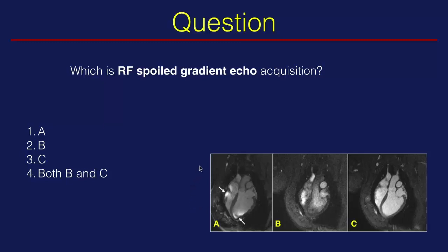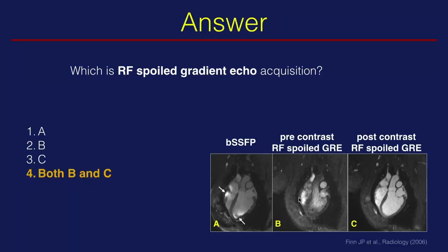Audience quiz: which image is an RF spoiled GRE acquisition — A, B, C, or both B and C? The answer is both B and C. The middle image has more inhomogeneities in the blood due to RF spoiled GRE, which can be corrected by using an intravascular contrast agent.